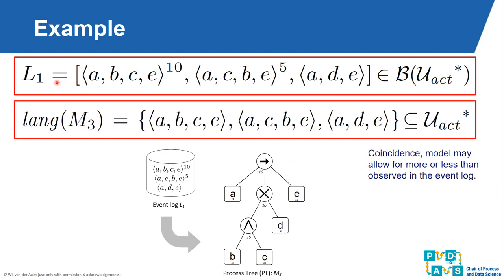Here we have an event log L1 consisting of 16 cases, where 10 cases follow the pattern A, B, C, E, etc. From this we can generate a process tree. If you look at such a process tree, it allows for certain behaviors expressed as a set of traces. In this case, if you ignore the frequencies, these two things are the same — though that is not always the case, because the event log just contains examples and we need to generalize. A standard process model only tells what traces are possible and what traces are not possible; it doesn't say anything about frequencies.